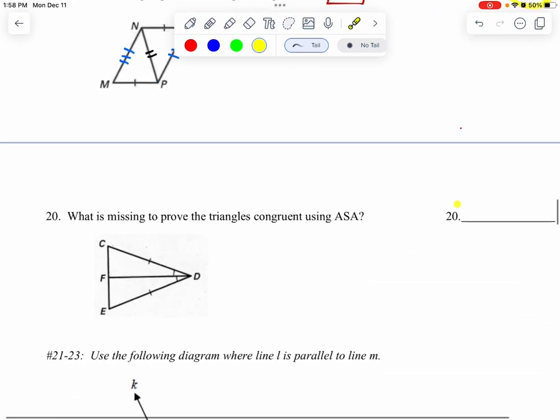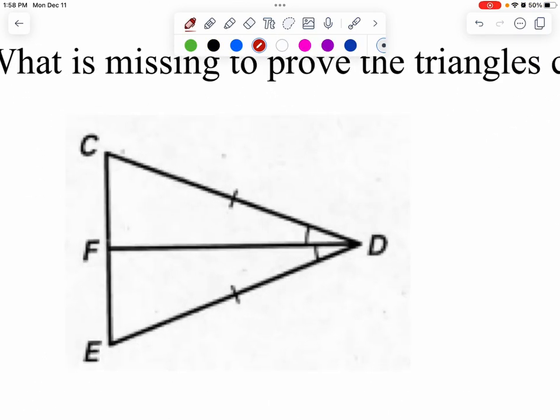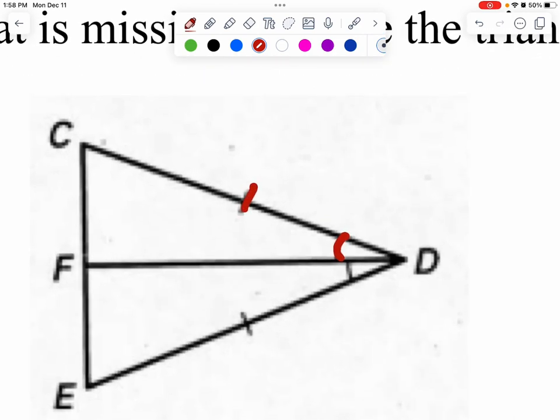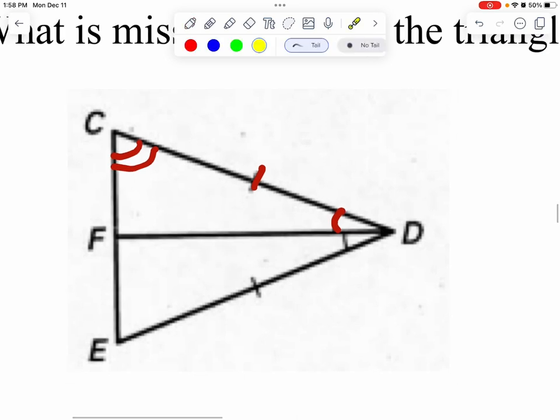One more. What is missing to prove ASA? So here's what we need. ASA, angle, side, angle. And it looks like I have an angle already and a side. To have another angle, it needs to be this one. And why does it have to be that one? Because the side has to be in between the two angles. Okay, so I'm going to mark angle C and I'm going to mark angle E.